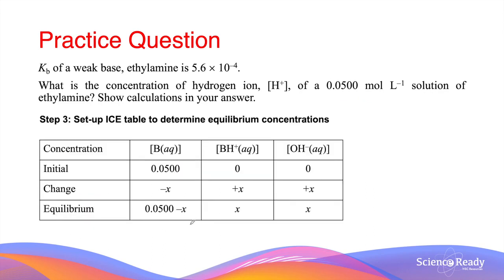The next step is to set up an ICE table to calculate the concentrations at equilibrium. We start with 0.05 mol per liter of the base, and both ions were not present initially. As the base ionizes, it will decrease in concentration, while the two ions will increase in concentration by the same amount.